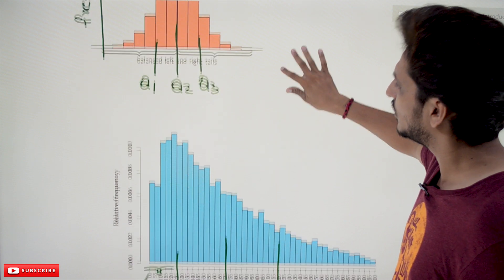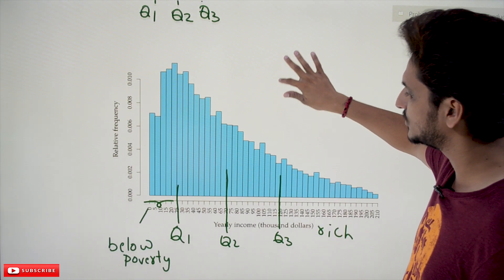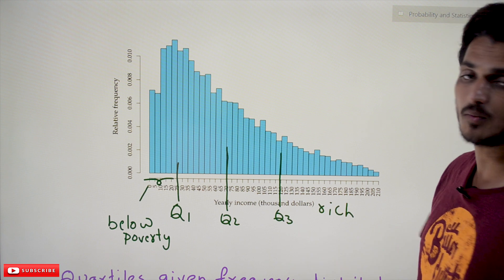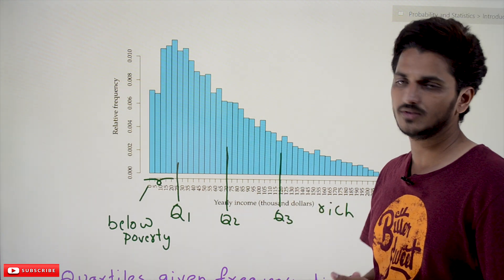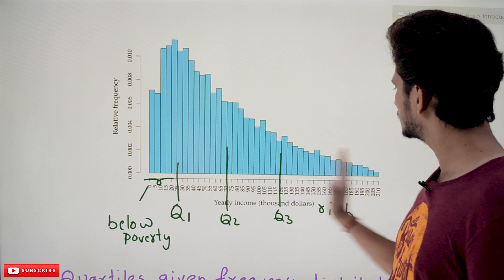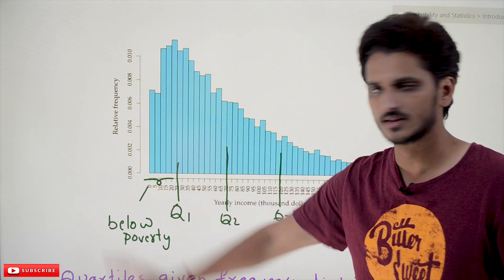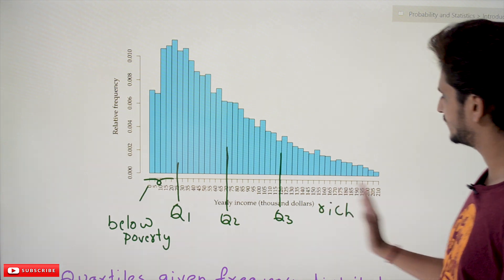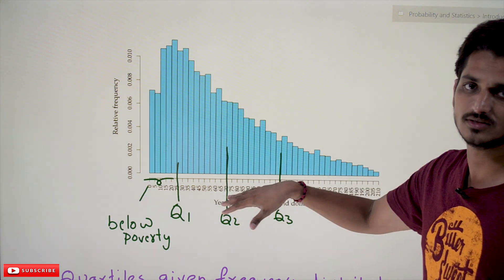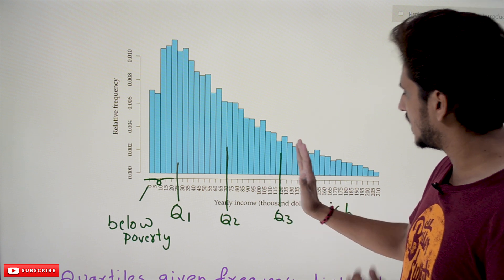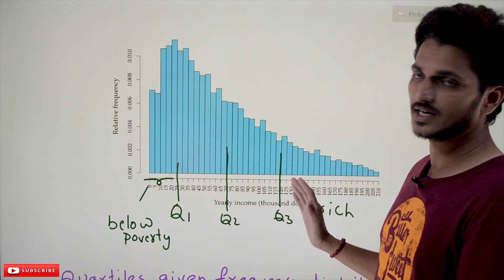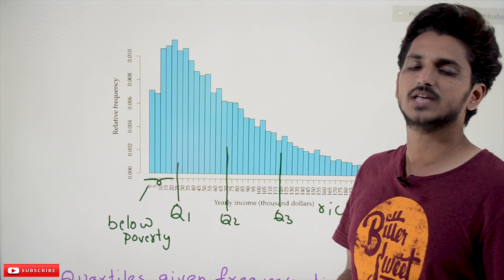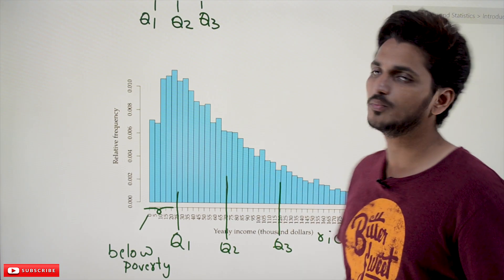Let's take one more example: an asymmetric, right-skewed distribution. Here the popular example of yearly income of the population is taken. If you identify the quartile points: Q3 comes somewhere around here, Q2 is the median value, and Q1 comes somewhere around here. The class of people below Q1 we call the below-poverty-line class, the class above Q3 we call the rich class, and those in between are the middle class. This way you can identify the minimum yearly income for rich people and the maximum income for below-poverty-line individuals.